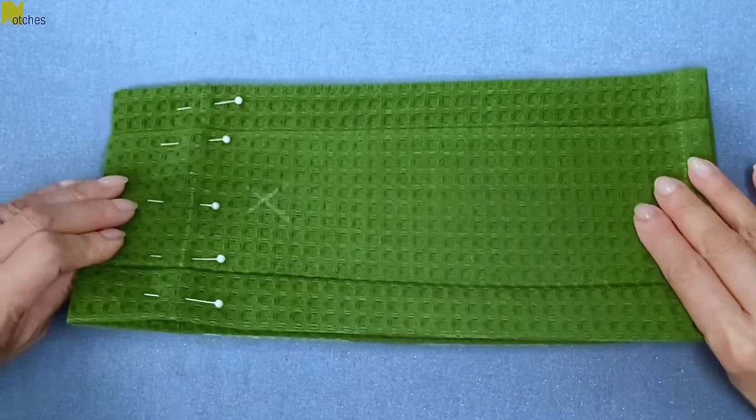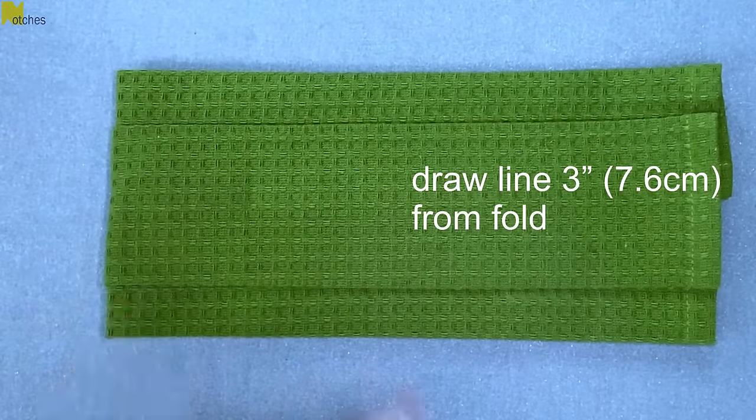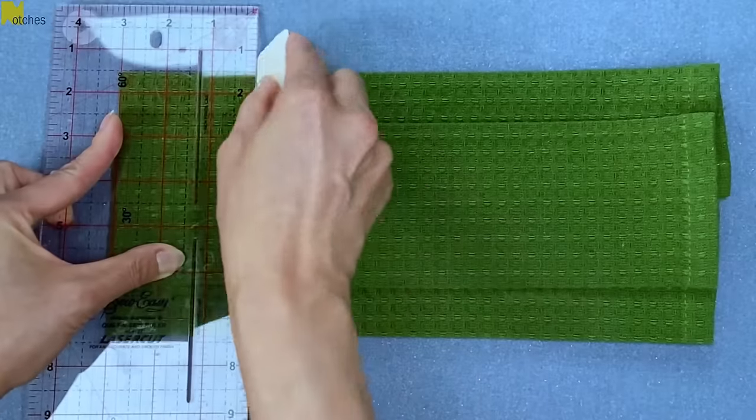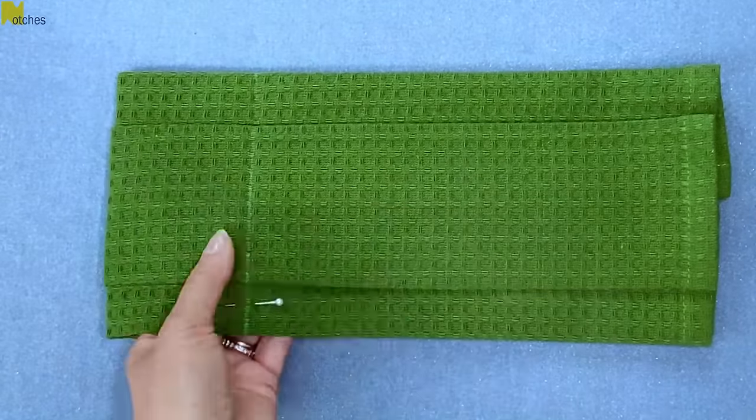Turn it over to the other side and now this time from the fold, measure in three inches and draw a line. This is the front of the towel. Again, place your hand underneath and pin all these folds in place.